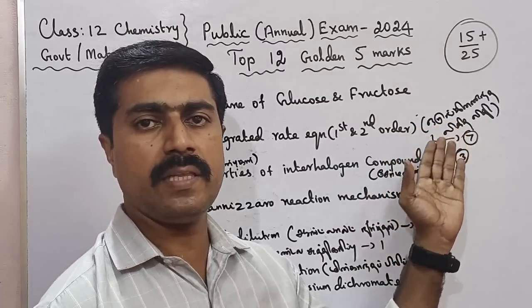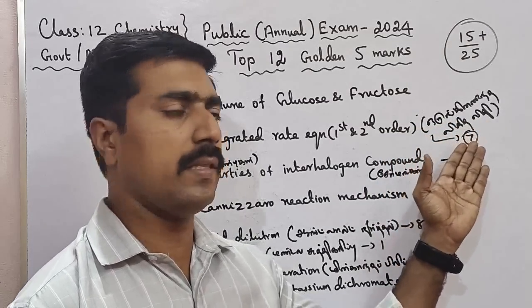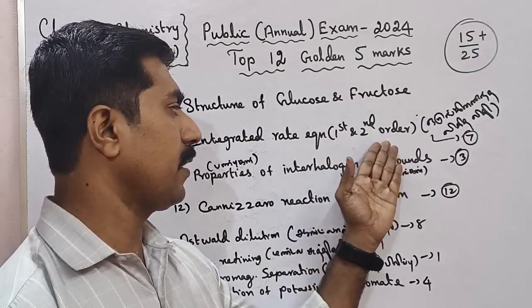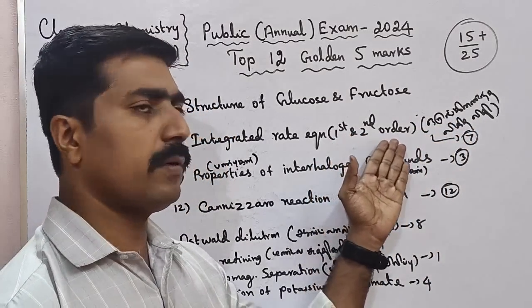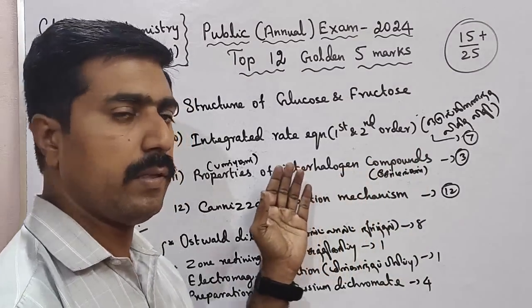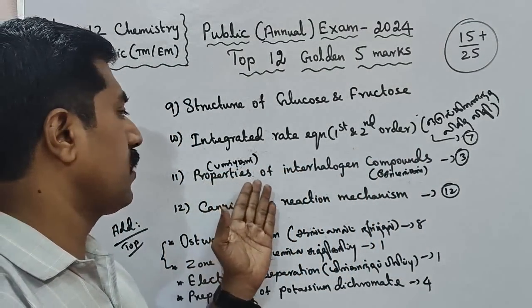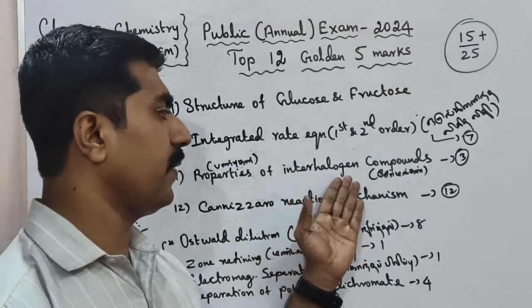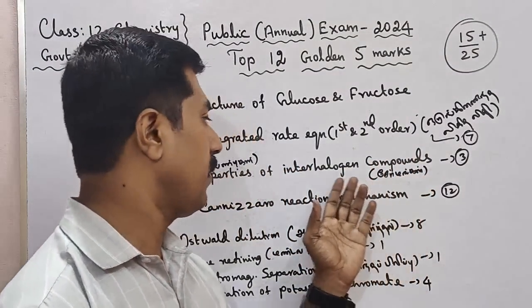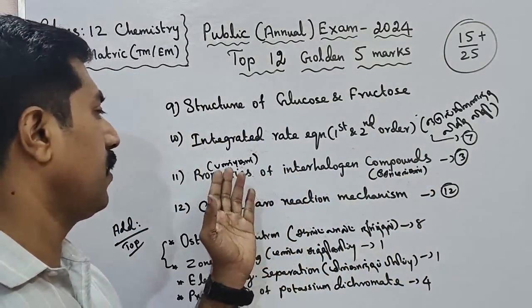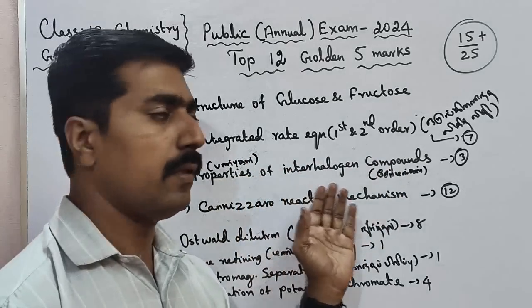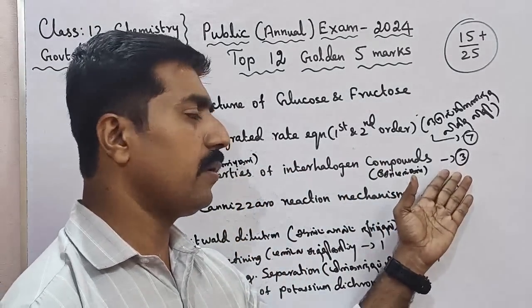The Integrated Rate Equation covers 1st order and 2nd order — Unit 7. Question 11: Properties of Interhalogen Compounds — Interhalogen, Unit 3.